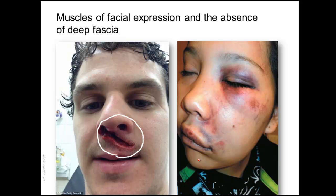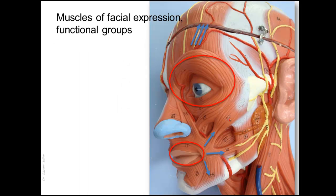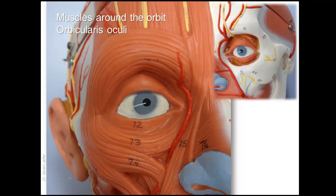The muscles of facial expression constitute functional groups — they form groups around the orifices and act as sphincters and dilators. This is probably their main function, and the varying expressions produced on the face are essentially side effects of these muscles. The orifices of the face include the eye, nose, mouth, and ear. There is a sphincter mechanism, shown in red, and a dilator mechanism, indicated by the blue arrows.